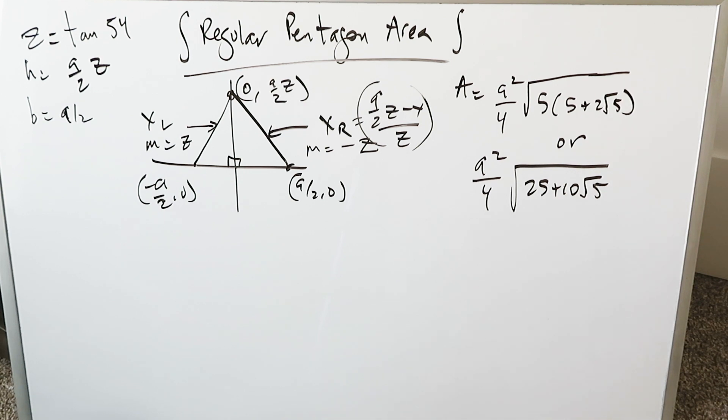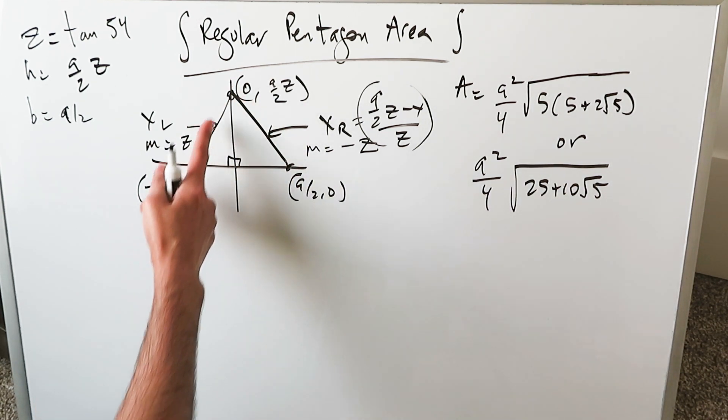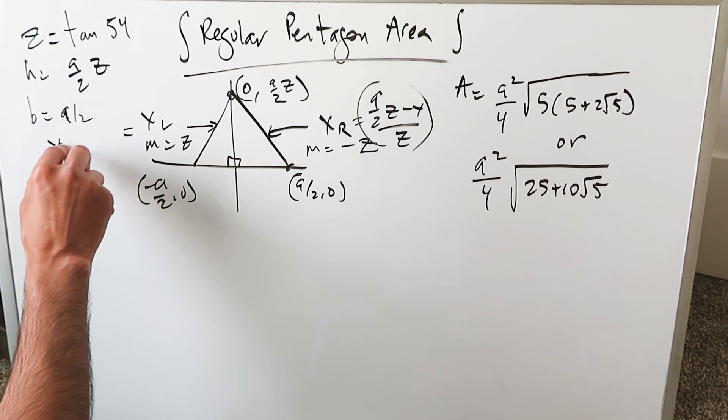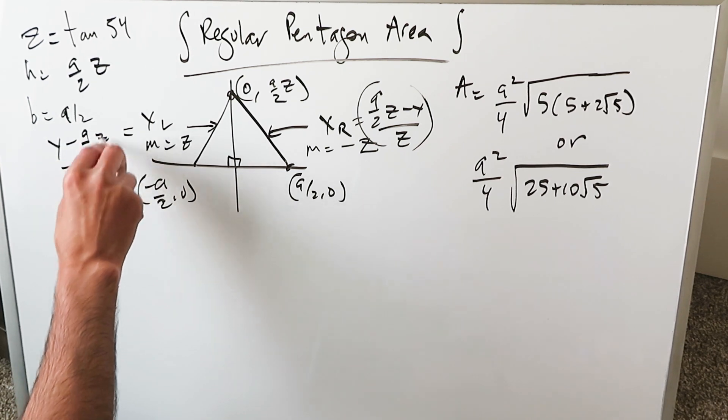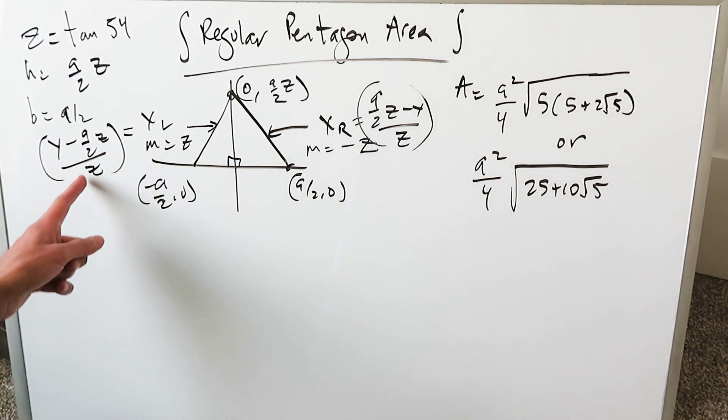You know 45, 45, 90, 30, 60, 90. We don't have that. This is symmetric to that in terms of the Y axis. This equation here will be easy. It will be Y minus A over 2 Z over Z. You can easily determine this on your own. The slope and then solve for X. All of that.